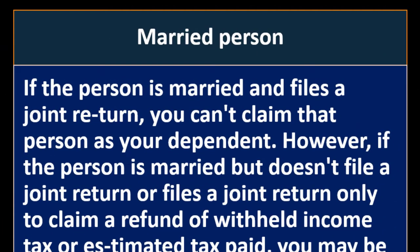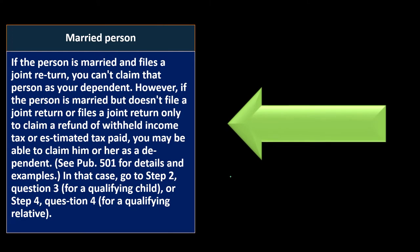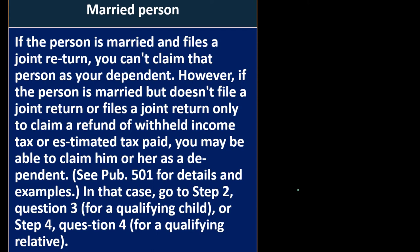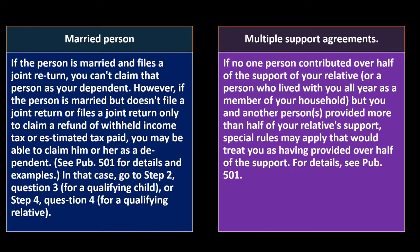Married person: if the person is married and filing a joint return, you generally can't claim the person as your dependent — they're filing married filing jointly and therefore no longer qualify as someone else's dependent. However, if the person is married but doesn't file a joint return, or files a joint return only to claim a refund of withheld income tax or estimated tax paid, you may be able to claim him or her as a dependent. See publication 501 for details. In that case, go to step 2, question 3 for qualifying child, or step 4, question 4 for qualifying relative. You can find all details in the instructions to Form 1040 and the publications.